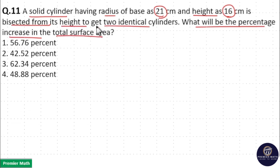Here when you bisect, you are creating two additional bases. This is the cylinder, and here you are bisecting it from the height to get two identical cylinders. That is, you are bisecting from the midpoint. Now you are creating two additional bases, one here and one here. If you look at this, you are creating one additional base here and also one additional base here.